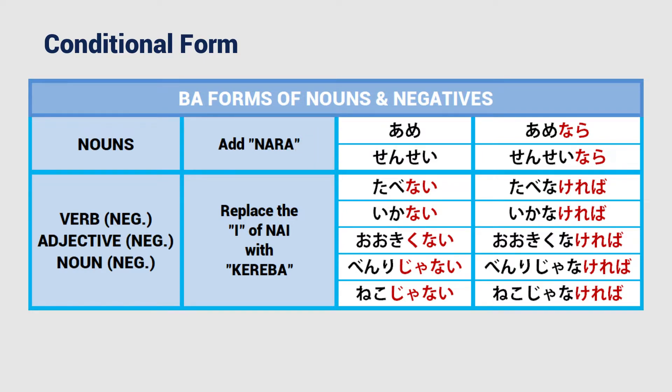For negatives, since nai behaves like an adjective, it follows the rule of i-adjectives. Now that we know the conjugation rules, let's move on to the next topic.